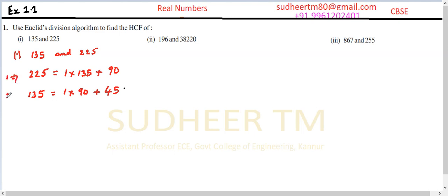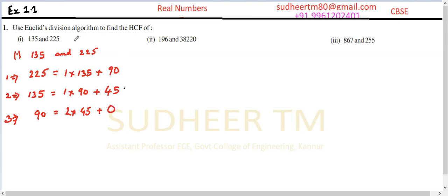In step 3, bring the divisor 90 to the left as the new dividend, and 45 (the previous remainder) becomes the new divisor. Dividing 90 by 45, we get a quotient of 2 and remainder 0: 90 = 2 × 45 + 0.